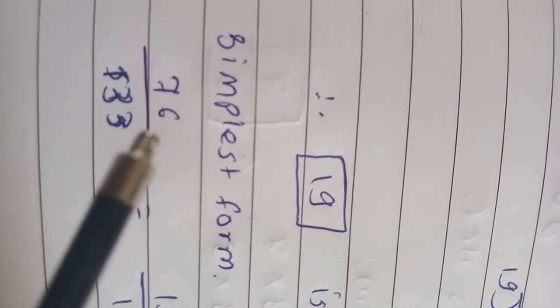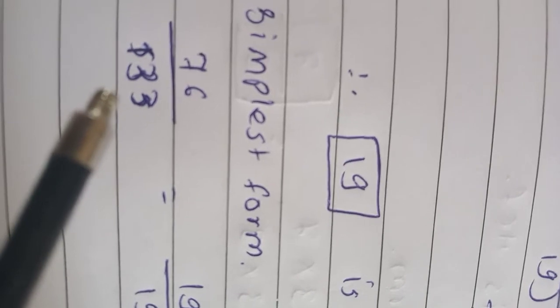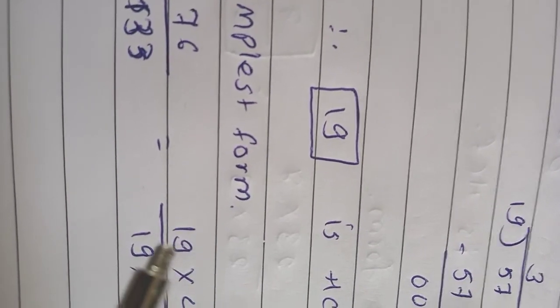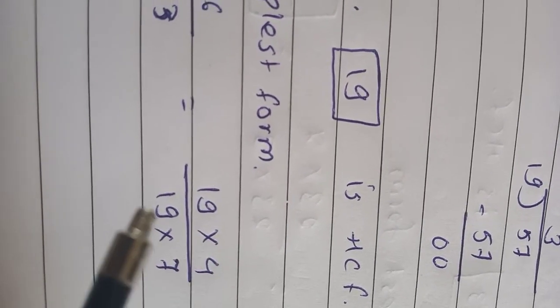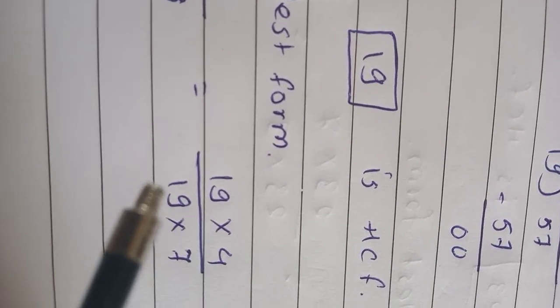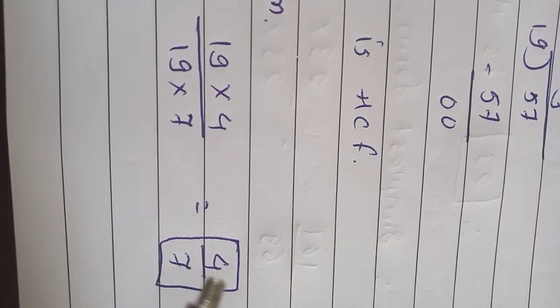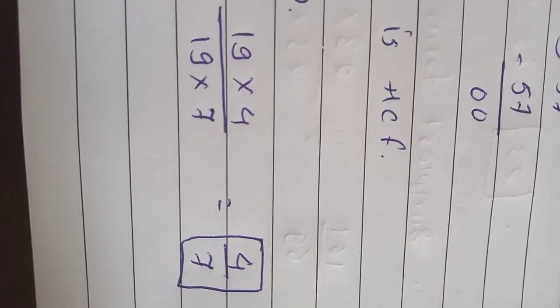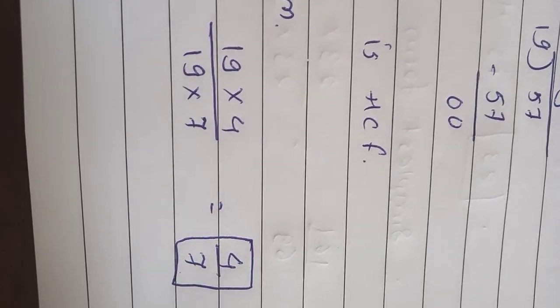Now we have to write this in simplest form. 76 divided by 133. 19 is the common factor. 19, 4 are 76. 19, 7 are 133. 19 get cancelled. And the simplest form remaining is 4 divided by 7.